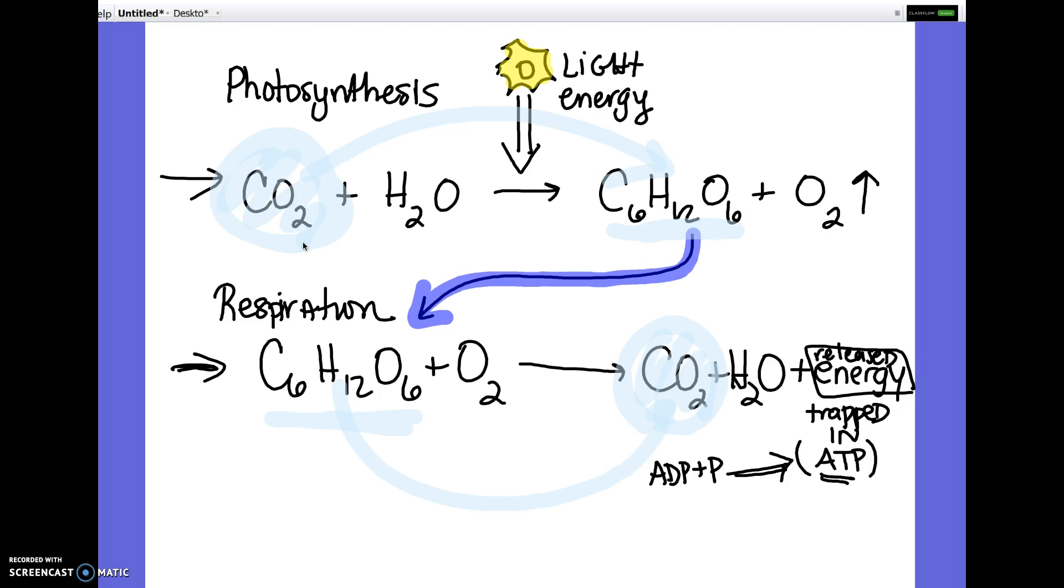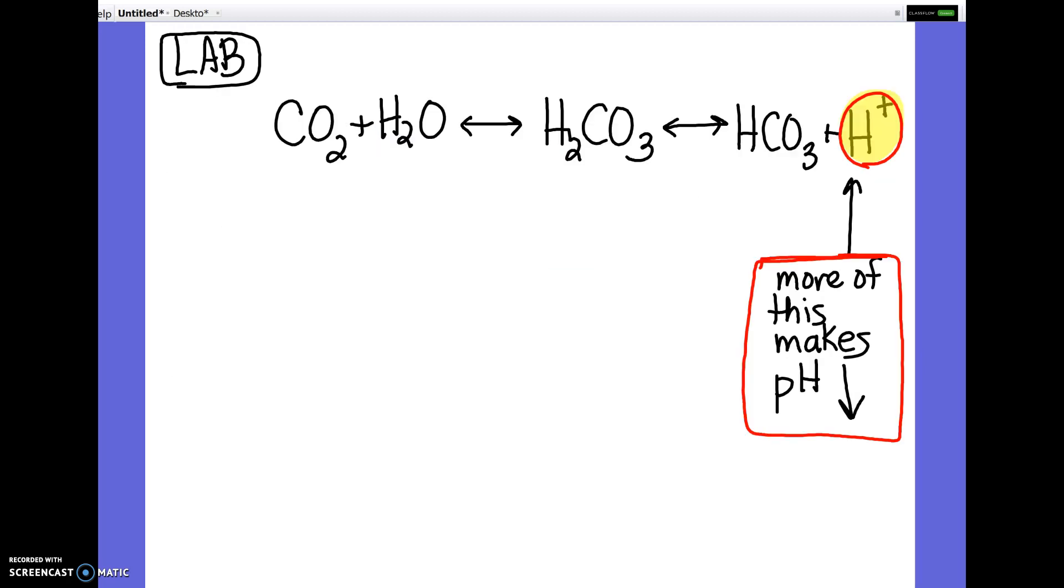Why does that affect pH? This is why. Because carbon dioxide, when it's bubbled into water, makes carbonic acid, an acid. So as the carbon dioxide levels go up, like the one in the dark that was only doing cell respiration, it would have made more acid, more hydrogen ions. The pH went down, and that's why that one should have turned yellow.